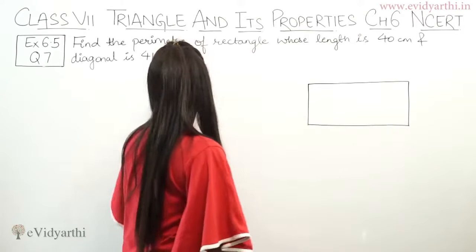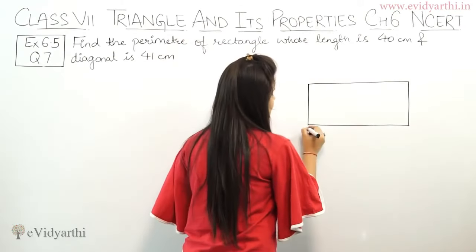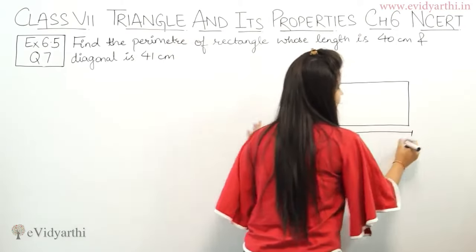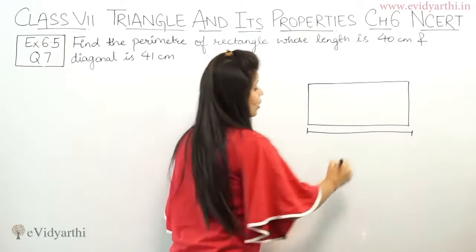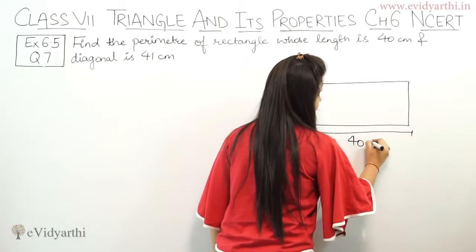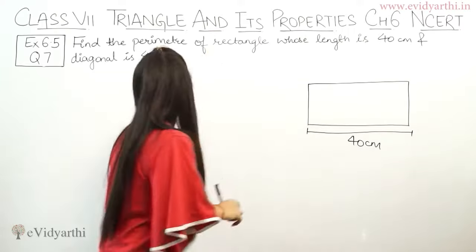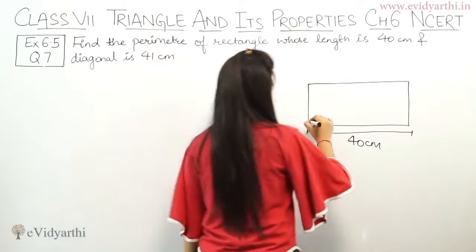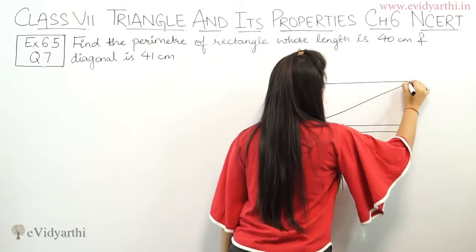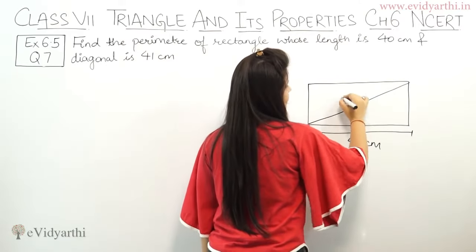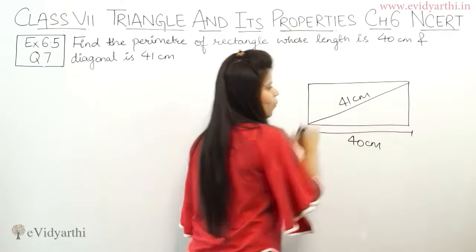First what is given? Length is given. Length is 40 cm. And we are given diagonal. Diagonal means this one. So how much is given? This is 41 cm.